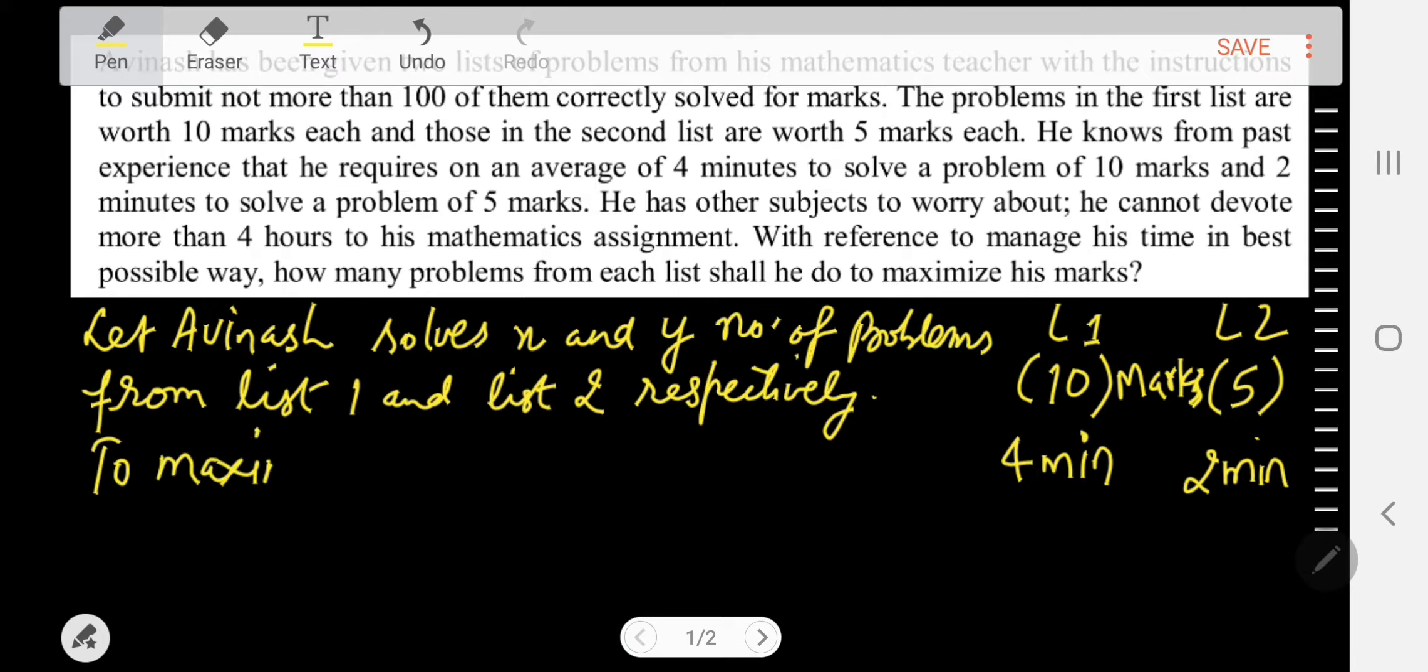To maximize, Z equals, for each problem of List 1 he will be given 10 marks, that means for List 1 we have 10x marks because he is solving x problems. Then we add 5y because from List 2 he is solving y number of problems and each problem is of 5 marks. So this is the marks, Z = 10x + 5y.